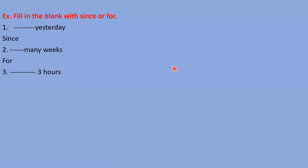Next: 'three hours.' Megan, you please tell me. Megan's answer: 'Since three hours.' That's a duration, so we need to say 'for three hours.' Very good. Next: '10th March.' Which preposition — since or for? Answer: 'Since.' Yes, very good right answer — since 10th March, because that's a point of time, not a duration of time.